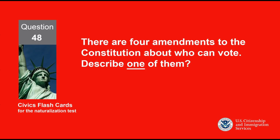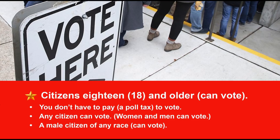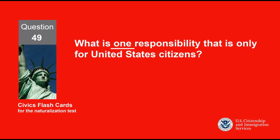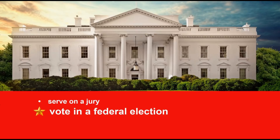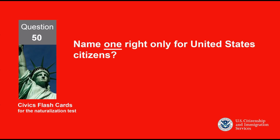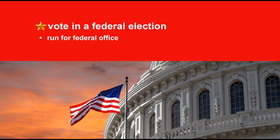There are four amendments to the Constitution about who can vote. Describe one of them. Citizens 18 and older. What is one responsibility that is only for United States citizens? Vote in a federal election. Name one right only for United States citizens. Vote in a federal election.